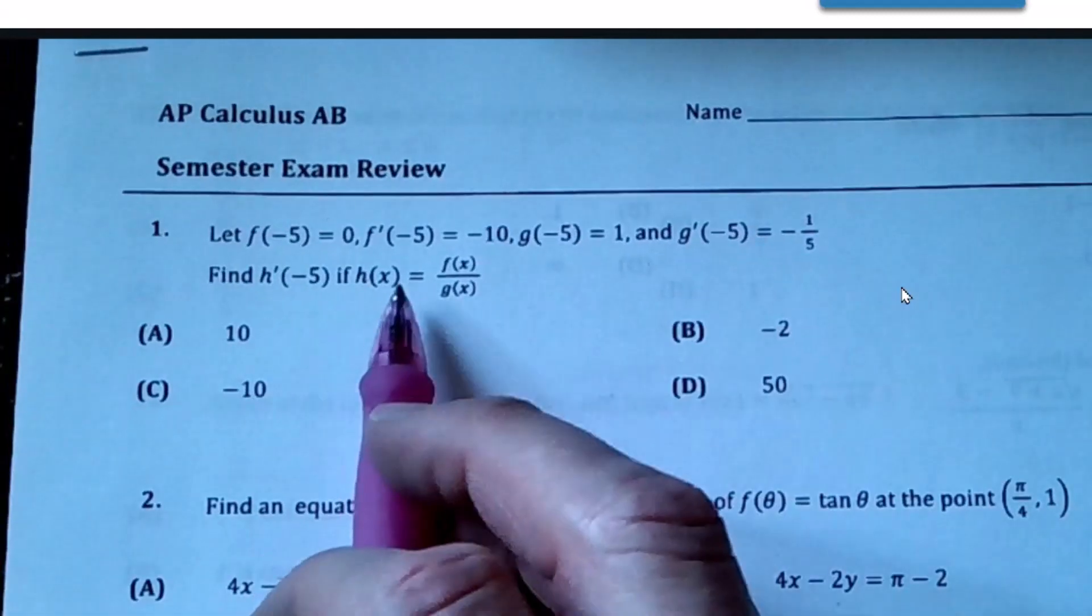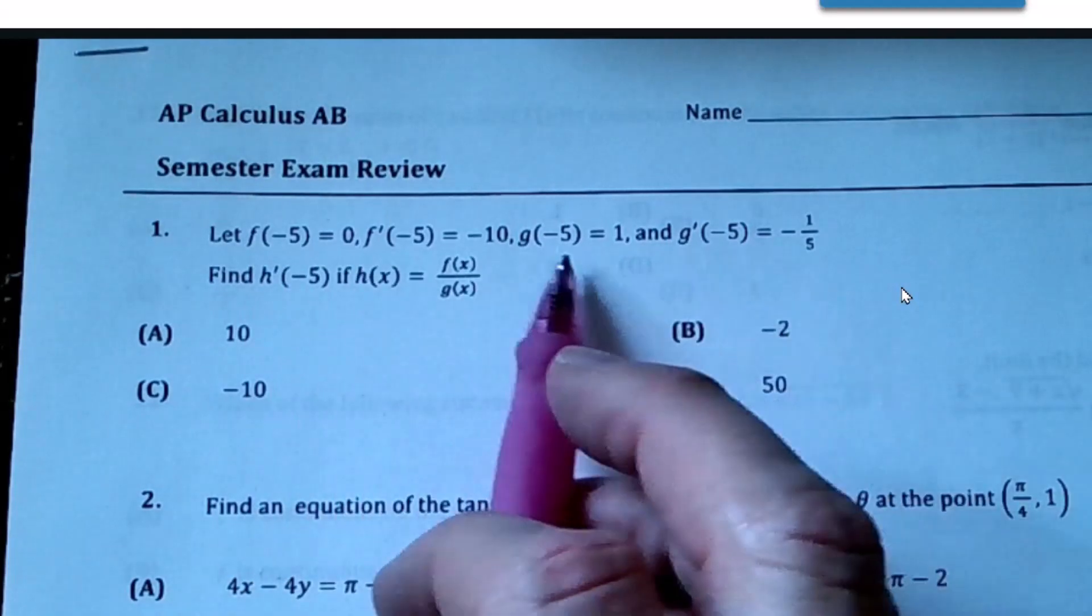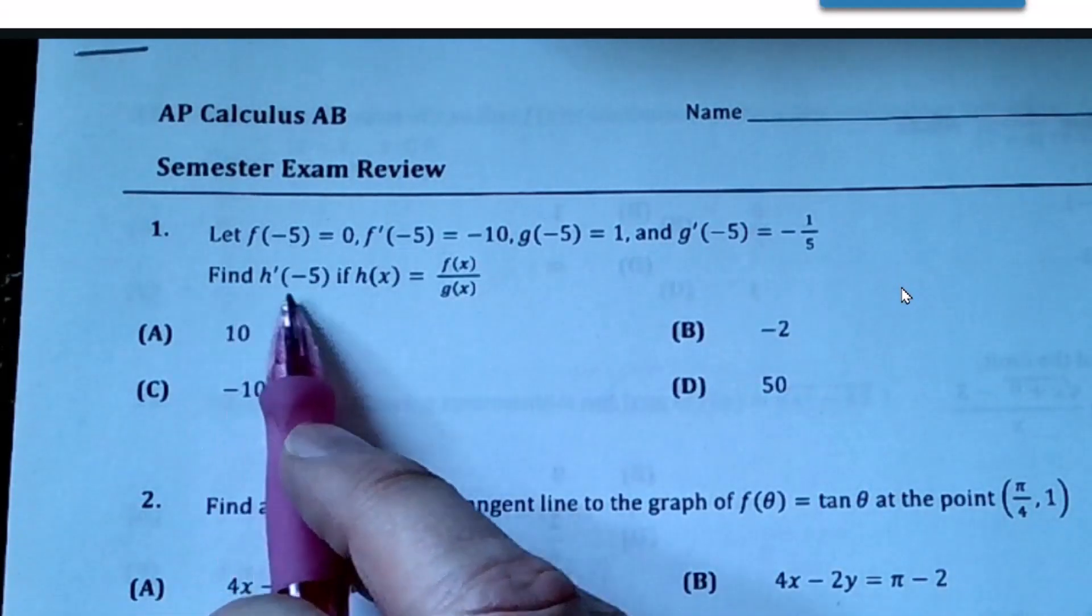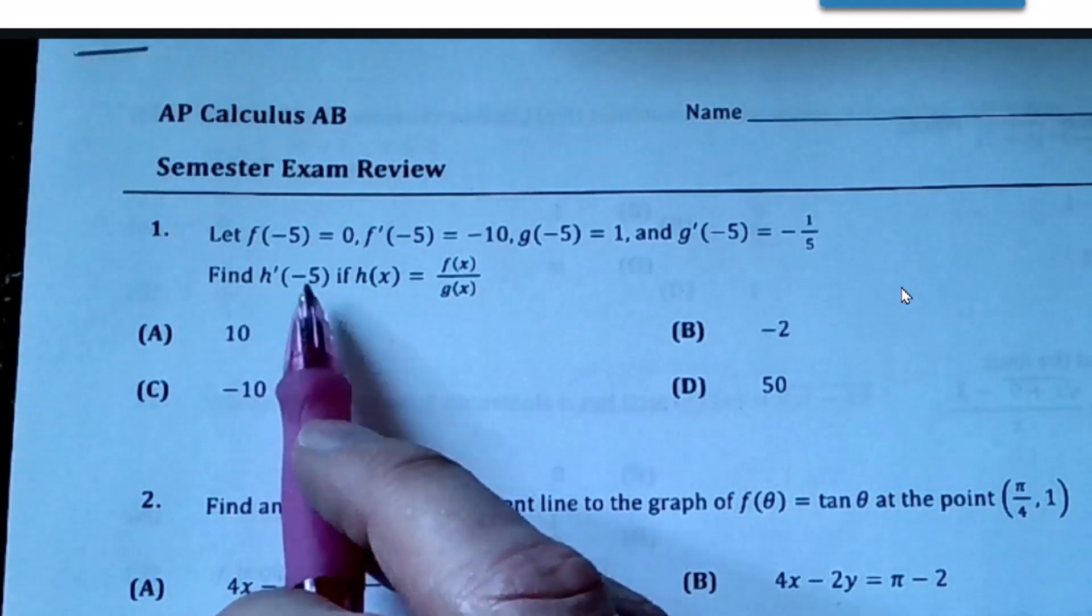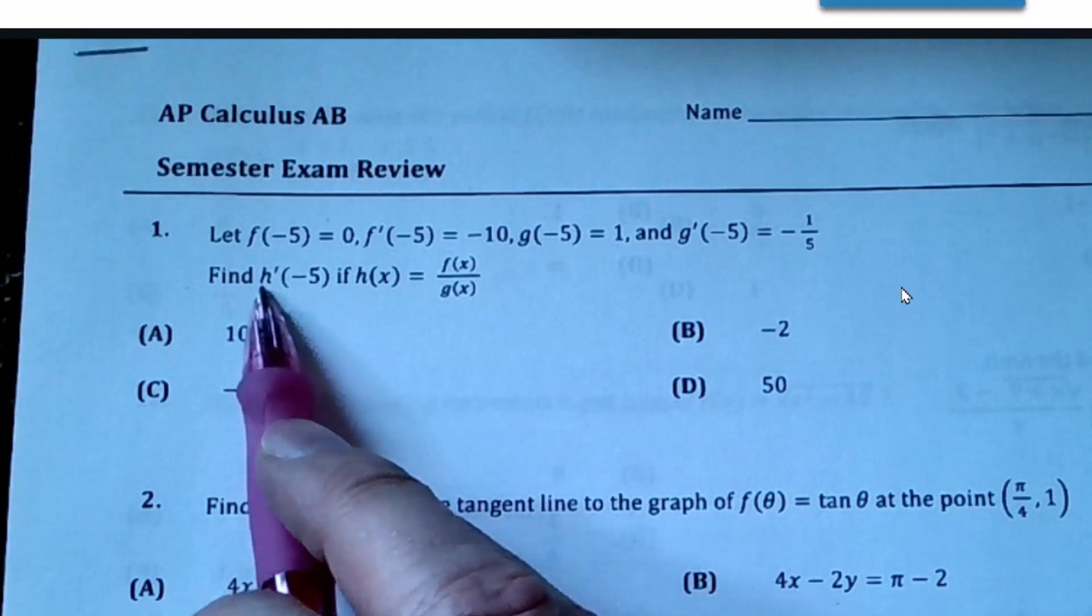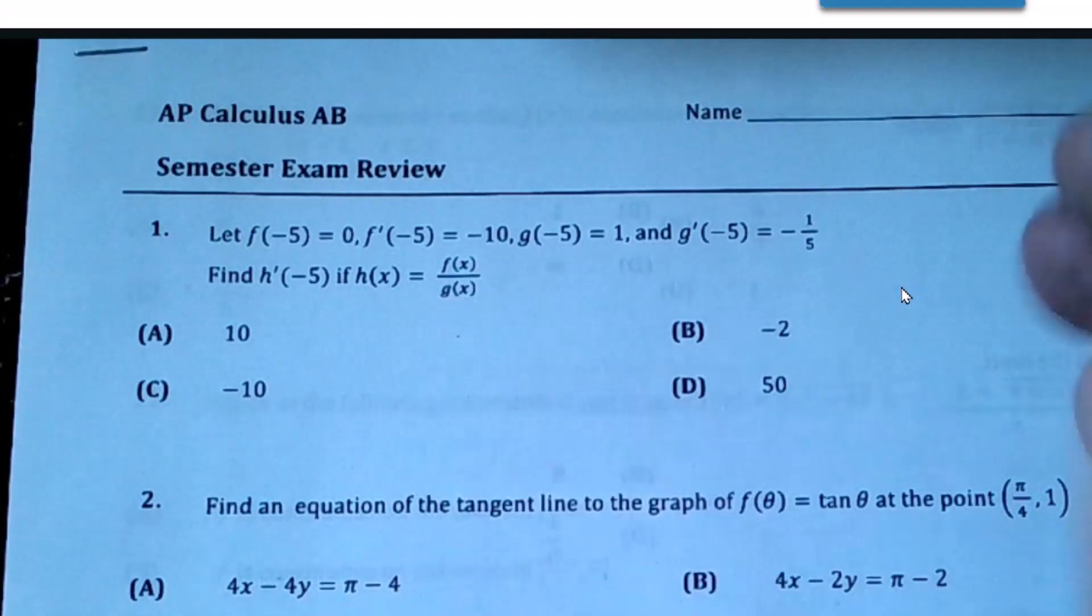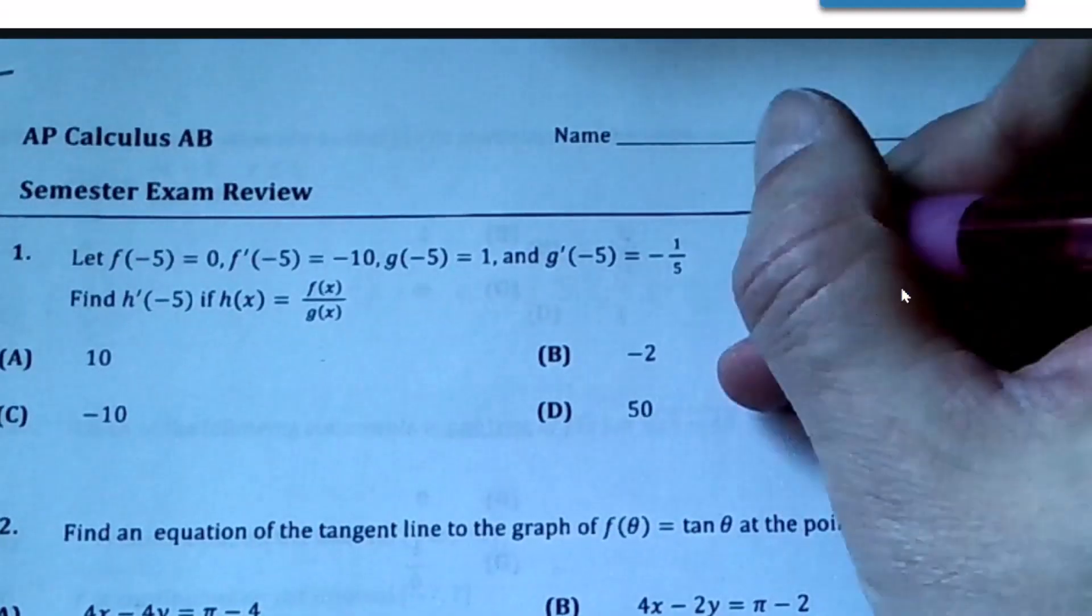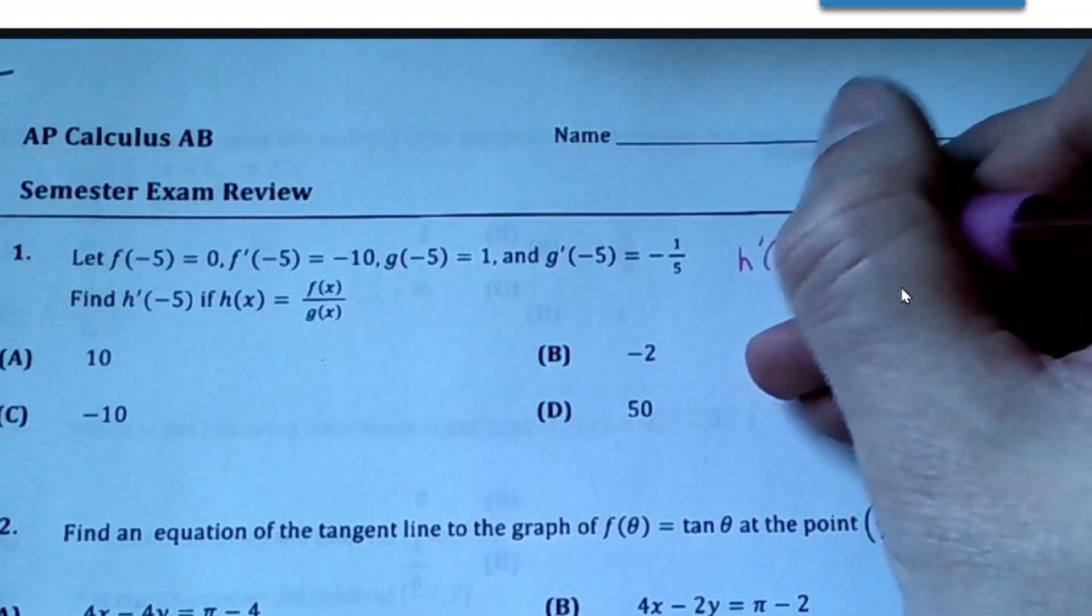Okay, so we've got some data here, but ultimately what we're trying to find is h'(-5). Here h is defined as a ratio of these two functions, so we have to use the quotient rule to find the derivative.